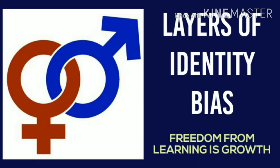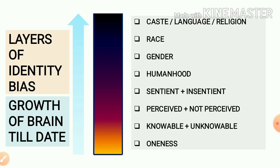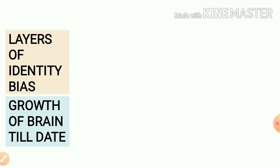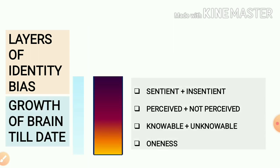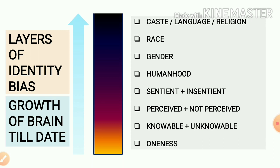Hello everybody. Today's topic is Layers of Identity Bias. We are going to analyze the growth of a brain step by step from the very beginning — from where a child who just took birth starts developing the brain. The dark brown or dark red part you are seeing on the screen is representing our brain. From the very childhood, it gets developed like a container, and whatever we learn is contained in the container.